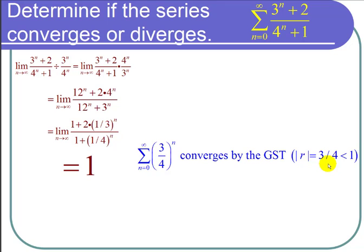The absolute value of r is of course still 3/4 which is less than 1. And the geometric series test tells us that the series converges when the absolute value of r is less than 1.